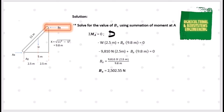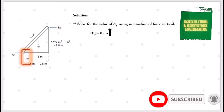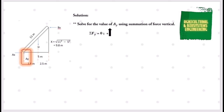After solving for Bx, let us proceed in solving the vertical component of A, or Ay, using the summation of vertical forces. Summation of forces in the y-axis equals zero. Forces directed upward are positive. We have positive Ay minus weight W equals zero. Substituting the weight of 9810 N and transposing gives us a final value for Ay of positive 9810 N, confirming our assumed upward direction is correct.